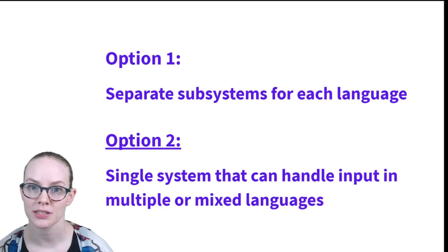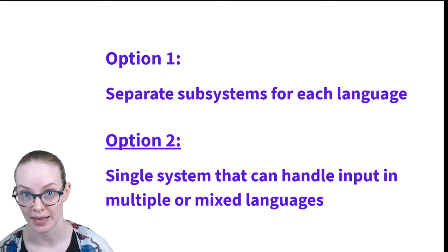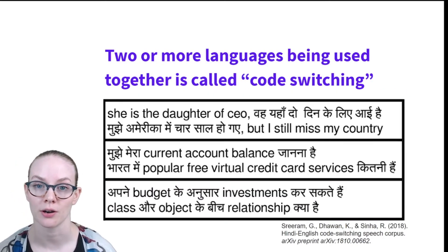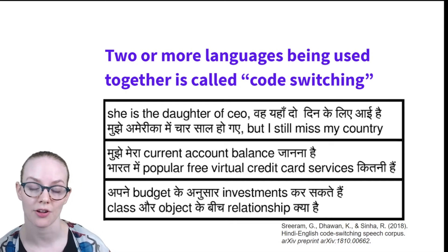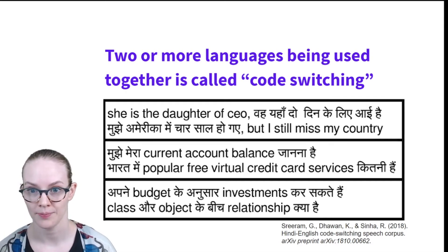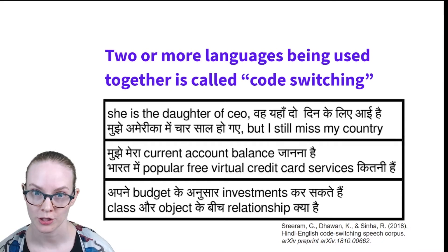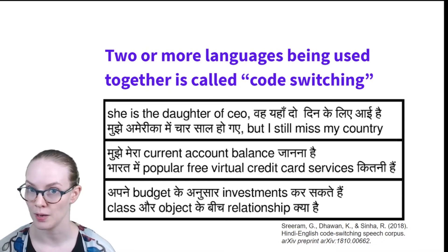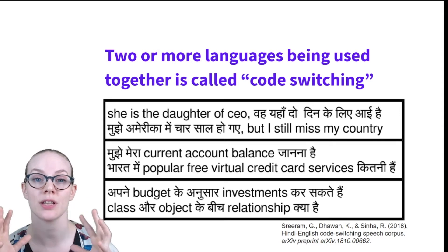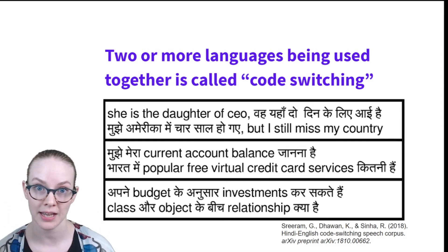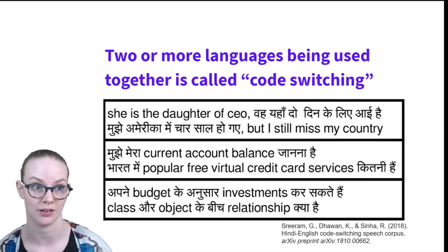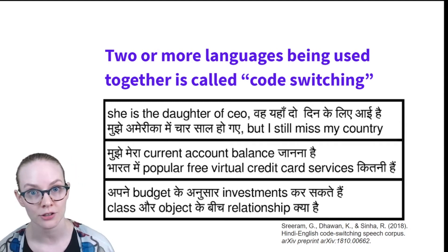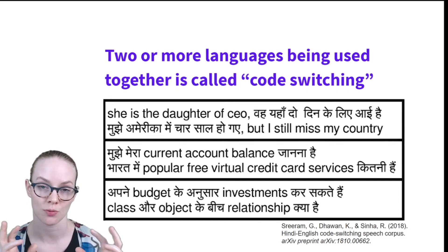Option two is a single system that can handle multiple languages. This can be particularly complex in situations where multiple languages are used together in a very close way. This is known as code switching. You may have examples where multilingual speakers use different languages in the same sentence or the same text, and your system will need to be able to handle both. We have an example here of some Hindi-English code switching where both languages are being used together.